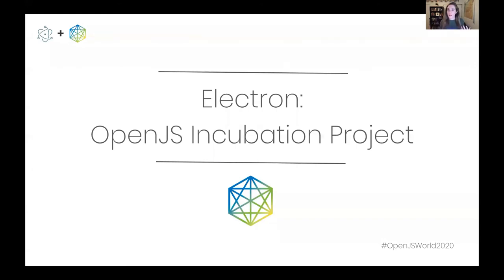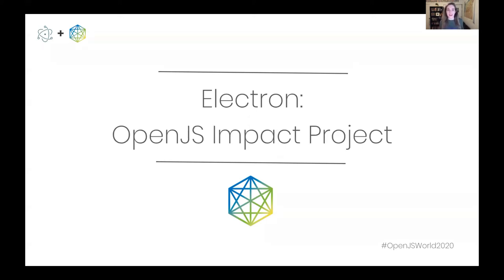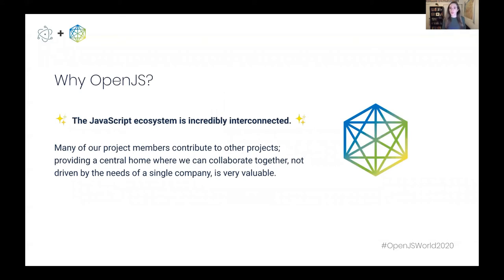As we were making these changes, we were also continuously moving through the OpenJS Foundation's incubation program. I'm very excited to announce today that Electron has graduated from the incubation program and is now an OpenJS impact project. We're very excited about this for a lot of reasons, but chief among them is we wanted to take a bigger part in the larger JavaScript community. The JavaScript ecosystem is so interconnected — many of our own maintainers contribute to other projects such as Node. As Electron continued to grow, we wanted to be intentional about giving back to that rich ecosystem and also inviting some of you into the Electron community if you'd like to join us.